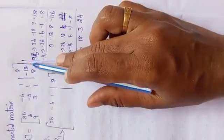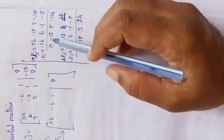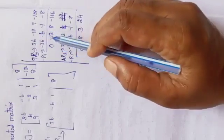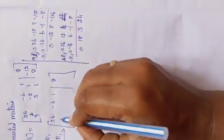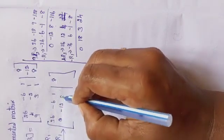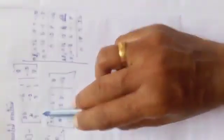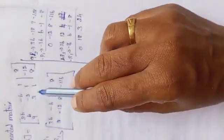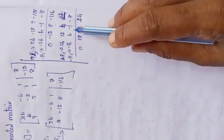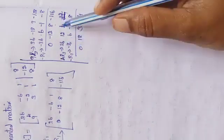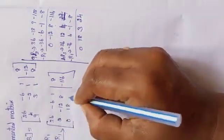R1 stays: 36, −6, 1, 8. For 9R2: 36, −18, 9, −108; minus R1 (−36, 6, −1, −8): gives 0, −12, 8, −116. For 4R3: 36, 12, 4, 32; minus R1 (−36, 6, −1, −8): gives 0, 18, 3, 24.